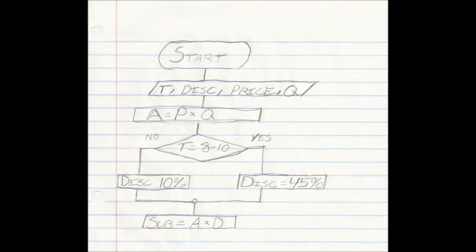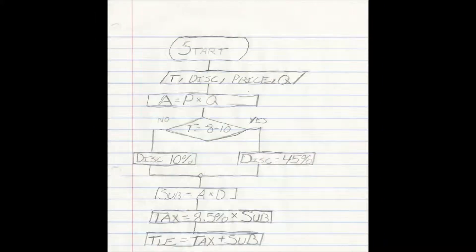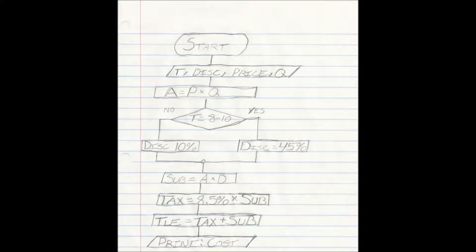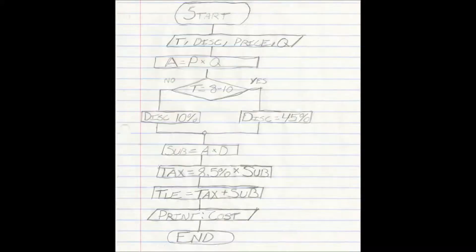Process: subtotal equals amount times discount. Tax equals 8.5 times subtotal. Total equals tax plus subtotal. Print cost. Output. Stop or end.